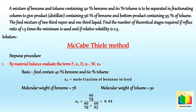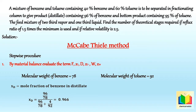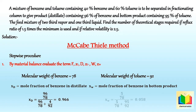Similarly, XD and Xw can be calculated. XD = (96/78) / (96/78 + 4/92), which gives XD = 0.966. And Xw for the bottom product: Xw = (5/78) / (95/78 + 5/92), which gives Xw = 0.058.